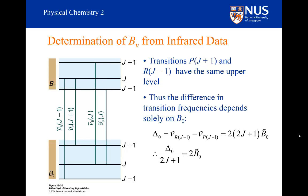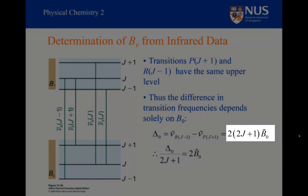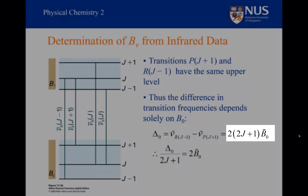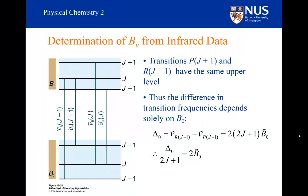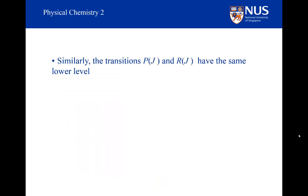The transitions P(J plus 1) and R(J minus 1) have the same upper level. So if I take the difference between them, I can write this down in terms of rotational energy. This energy difference is simply 2 times (2J plus 1) times B₀. If I rearrange this expression so that the energy gap is denoted as Δ₀ and divide through by (2J plus 1), the result is 2B₀. The expression has the same value for all values of J.